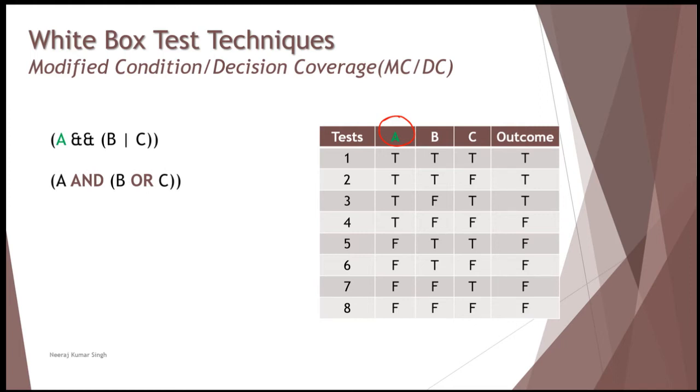So any input here, if it is flipped or changed, for example, if it is true, it has an outcome. And in case it is false, then it has a different outcome. Then we consider those tests. For example, let's consider the test one, where you see that all three tests are true, and the outcome is also true.